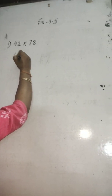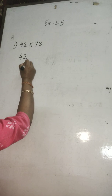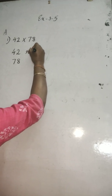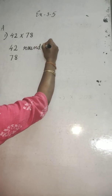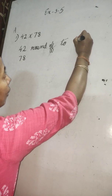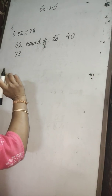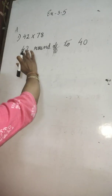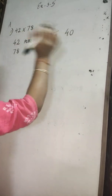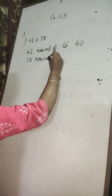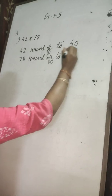42 and 78. First, round off 42. 42, if you round off, it will be 40 — round down, not up, because 42 is between 40 and 50. We have to round off to the nearest 10. It is nearer to 40, so you write 42 rounds off to 40. 78 rounds off to 80. Why? Because 78 is nearer to or closer to 80.